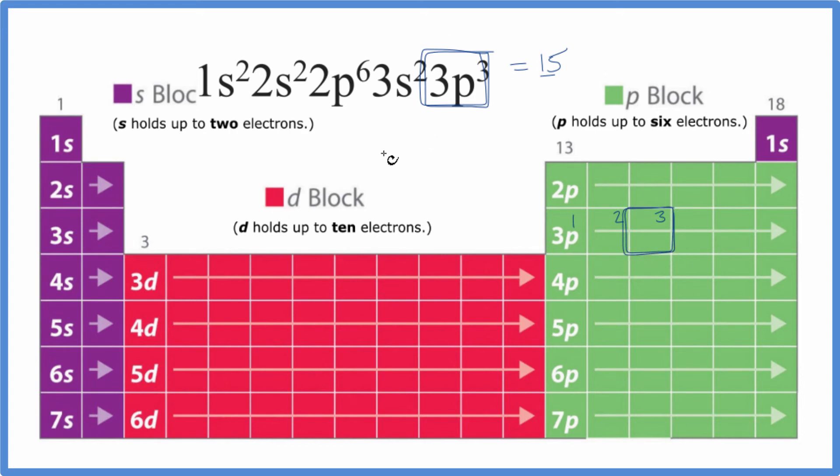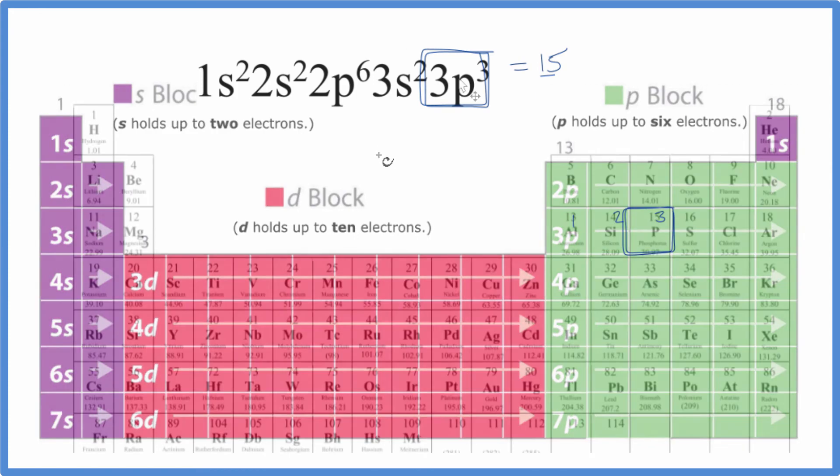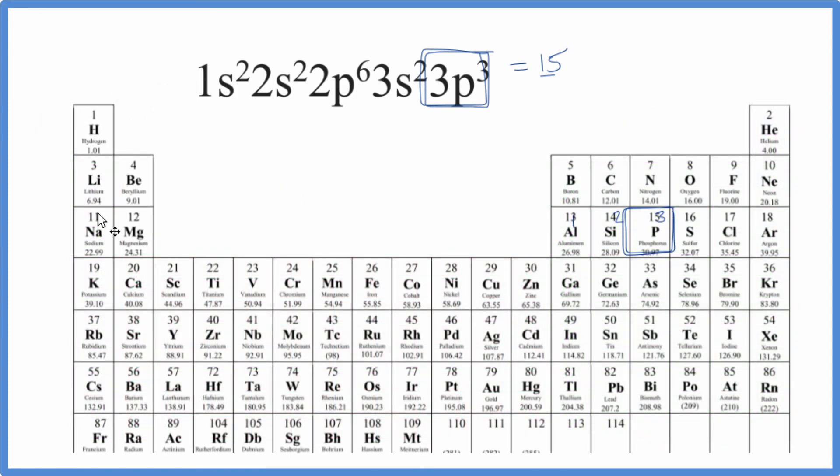Let's go back to the periodic table with the elements listed. So again, we have phosphorus. We went 1, 2, 3, and we're going over. Here's the p block, p1, 2, 3.